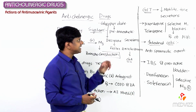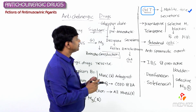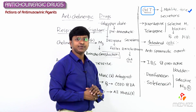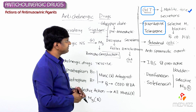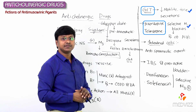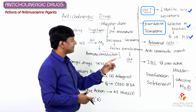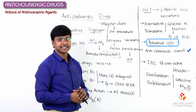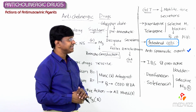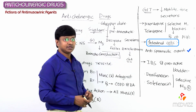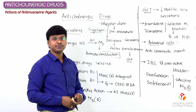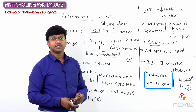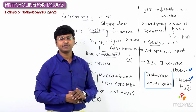In summary, anticholinergic drugs reduce motility, tone, and secretions within the gastrointestinal tract. Pirenzepine and telenzepine act as selective M1 blockers, used in the treatment of peptic ulcer disease. For intestinal colic, drugs like dicyclomine and clidinium have antispasmodic action. Darifenacin and solifenacin are selective M3 blockers useful for irritable bowel syndrome and overactive bladder.